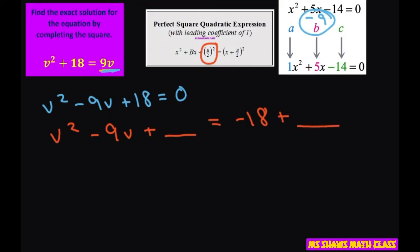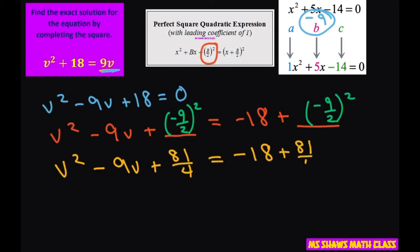So our b is negative 9. So we're going to write negative 9 divided by 2 squared on both sides of the equation because you can't add something to one side of the equation and not the other. So this is going to end up being v squared minus 9v plus 81 fourths equals negative 18 plus 81 fourths.